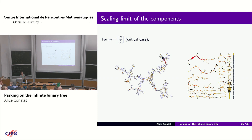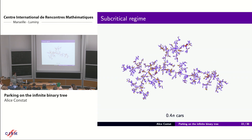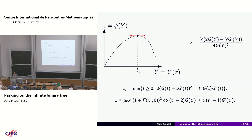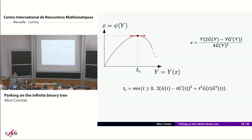Question: is there a combinatorial interpretation for the parametrization series y? Not really — this comes from the Bousquet-Mélou and Jehanne kernel method and I have no combinatorial interpretation.